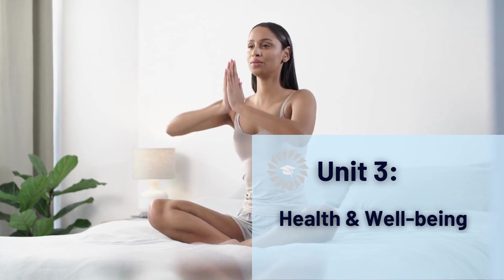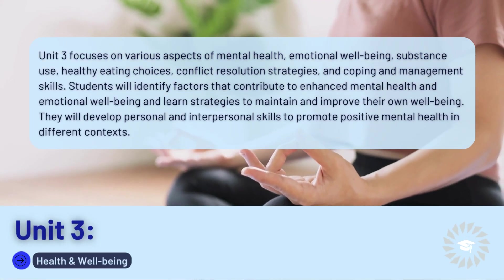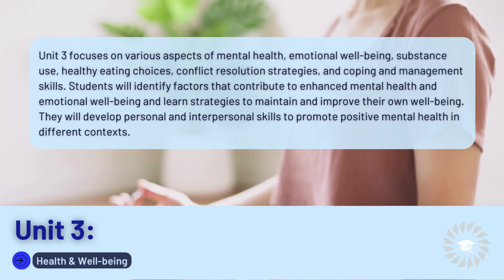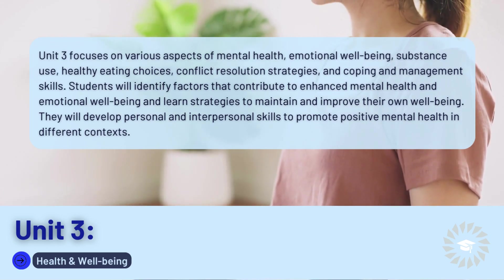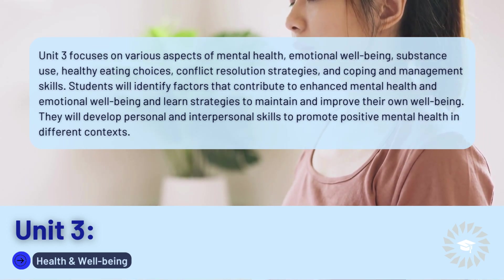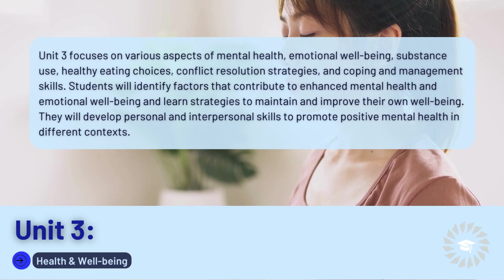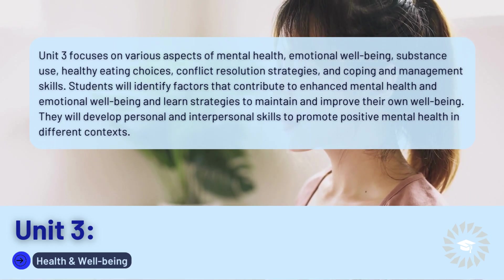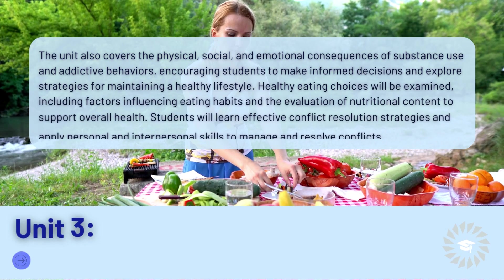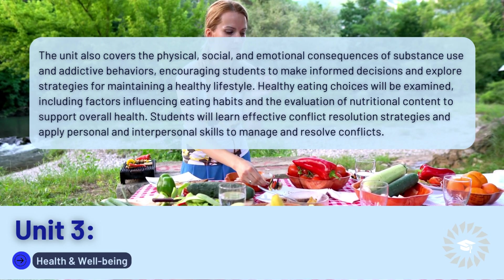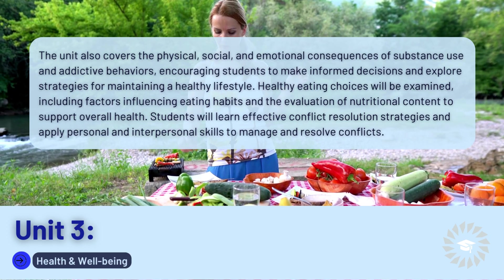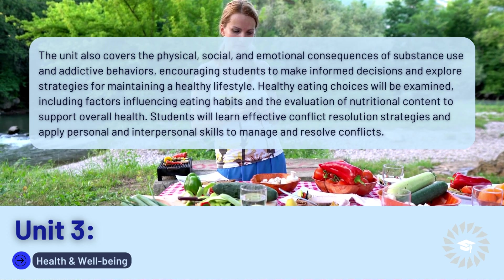Unit 3: Health and Well-Being. Unit 3 focuses on various aspects of mental health, emotional well-being, substance use, healthy eating choices, conflict resolution strategies, and coping and management skills. Students will identify factors that contribute to enhanced mental health and emotional well-being and learn strategies to maintain and improve their own well-being. They will develop personal and interpersonal skills to promote positive mental health in different contexts. The unit also covers the physical, social, and emotional consequences of substance use and addictive behaviors, encouraging students to make informed decisions and explore strategies for maintaining a healthy lifestyle.